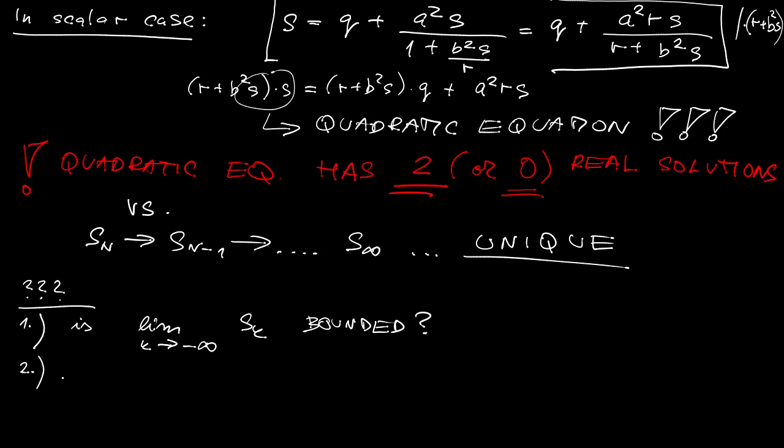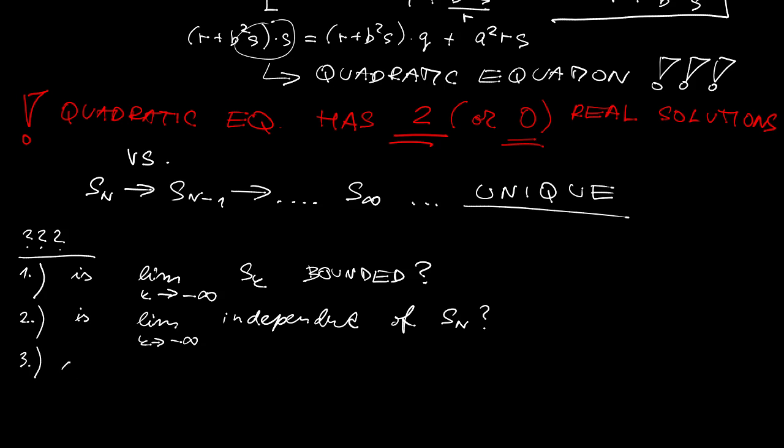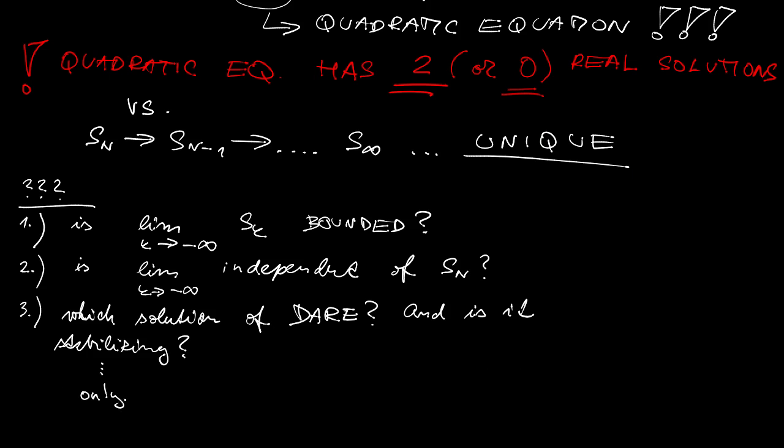First, we actually need to know if the sequence of sk is actually converging to something. Second, we need to know if the limit to which the sequence converges is actually dependent on the initialization by Sn. And third, we also need to know which solution of discrete time algebraic Riccati equation to choose, and is the one that we choose actually stabilizing our closed loop system?